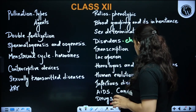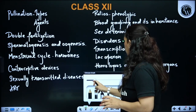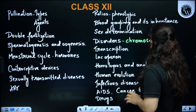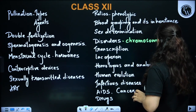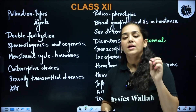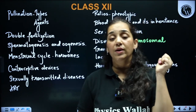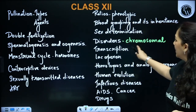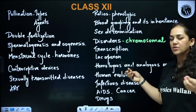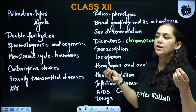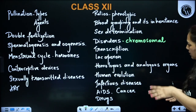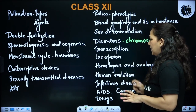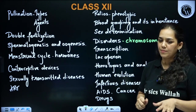In disorders, chromosomal disorders are most often asked, but you cannot neglect Mendelian disorders — they are also important. You should also know the definitions of polyploidy and aneuploidy, and the chromosomal complements seen in Klinefelter syndrome, Turner's syndrome, and Down syndrome. Then we come to molecular basis of inheritance: transcription and the lac operon are repeatedly asked topics.